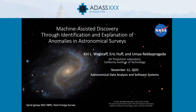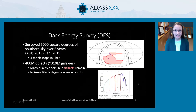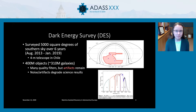I will be describing joint work with Eric Huff and Umar Rubber-Fargada at Jet Propulsion Laboratory on how we're using machine learning to help us hunt through extremely large astronomical survey data to find what might be interesting and what should be pulled out. As a case study, we'll be focusing on data collected by the Dark Energy Survey, which surveyed 5,000 square degrees of the southern sky using a 4-meter telescope in Chile. The result is a massive catalog of 400 million objects, of which about 310 million are galaxies.